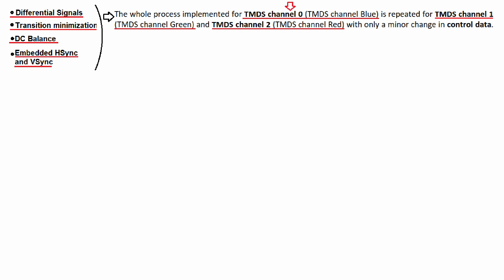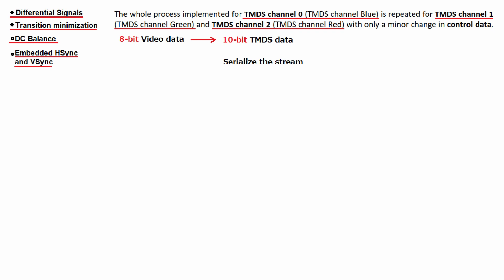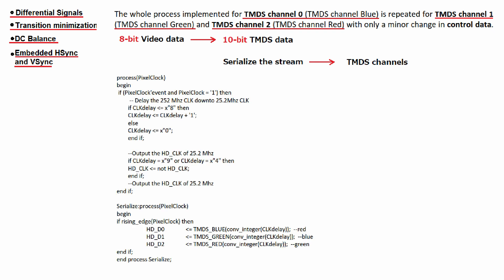The four technologies are duplicated on all video data channels: blue is TMDS channel 0, green is TMDS channel 1, and red is TMDS channel 2. After all four technologies are implemented, the stream has been encoded from 8-bit video data into 10-bit TMDS data. The final step is to serialize the stream and send it to the TMDS channels.